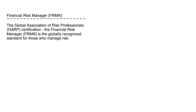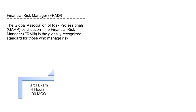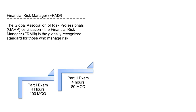The FRM exam is conducted in two parts. In this tutorial we are going to cover only Part One of the syllabus. Both Part One and Part Two are exams with multiple choice questions that last approximately four hours. In Part One there are 100 questions, whereas Part Two has only 80 questions.